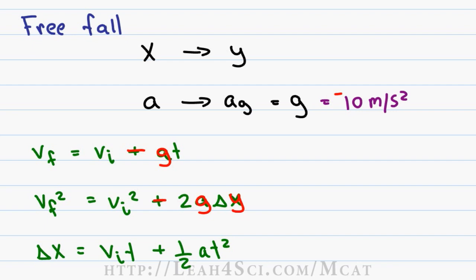And finally the last one, delta x is equal to v initial t plus 1/2 at squared. We switch the x to a y, we put negative and swap the a for a g.